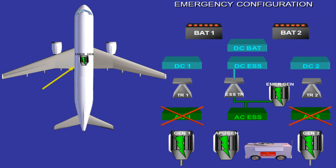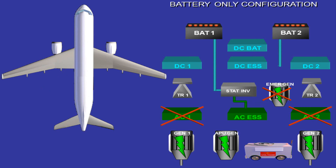The RAT is located in the belly fairing and extends in case of severe electrical or hydraulic failures. We will see the RAT activation later. In emergency configuration — loss of AC bus 1 and AC bus 2 — the essential TR is supplied by the emergency generator. In emergency configuration with emergency generator not available, BAT 1 supplies the AC essential bus via the static inverter and BAT 2 supplies the DC essential bus.